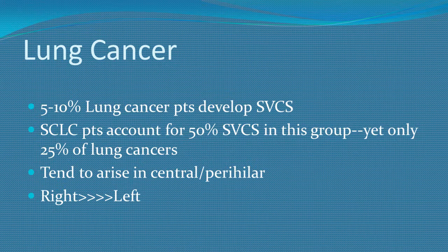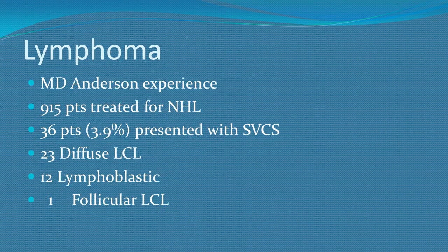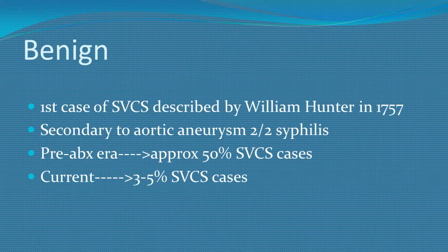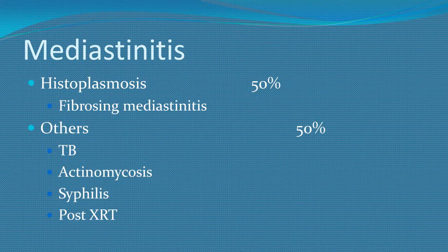Lymphoma — including diffuse large B-cell and lymphoblastic lymphoma — carries significant chances of causing SVC obstruction. Benign causes include aortic aneurysm; syphilis is also one cause. Mediastinitis from histoplasmosis, fibrosing mediastinitis, tuberculosis, actinomycosis, syphilis, and post-radiotherapy changes are further benign causes.